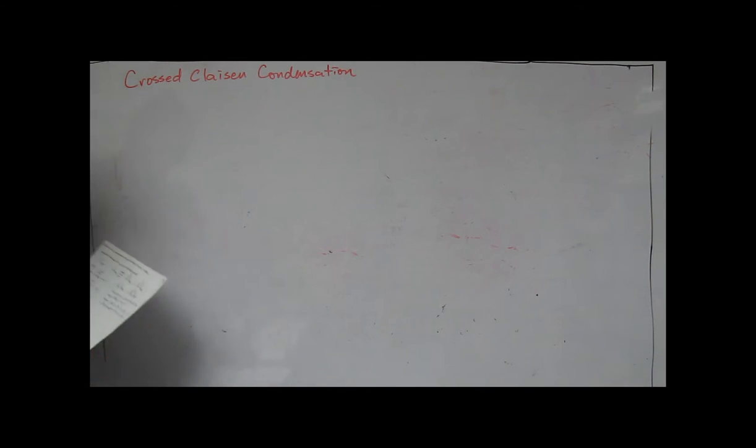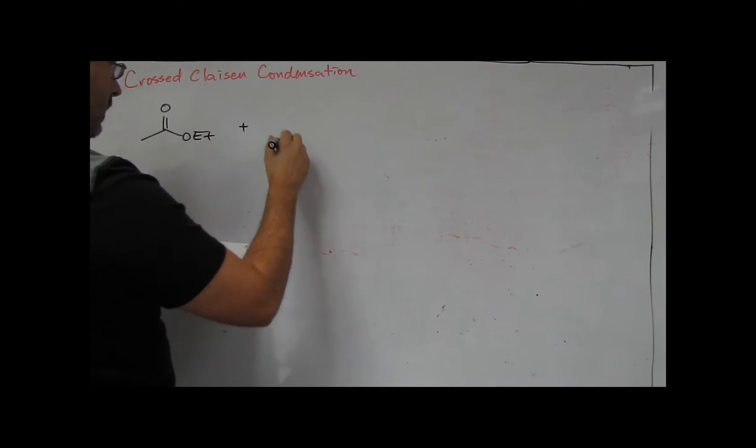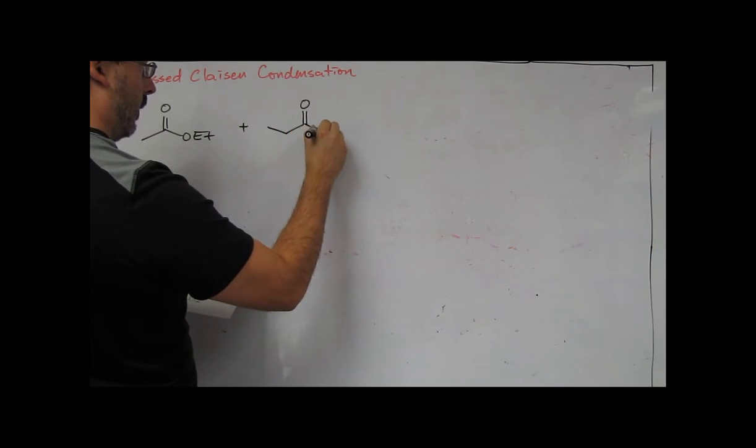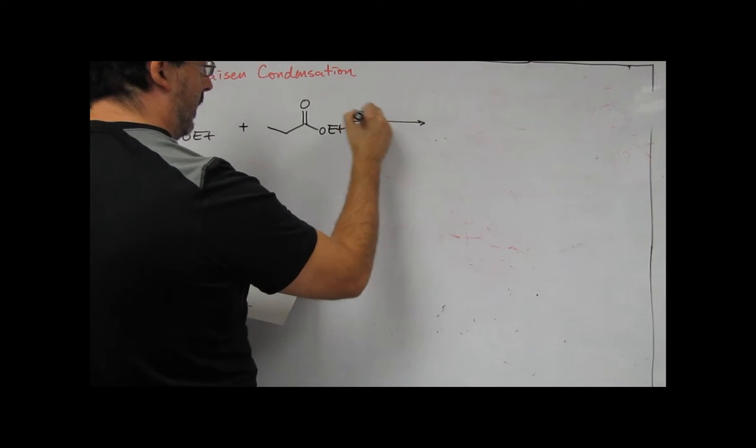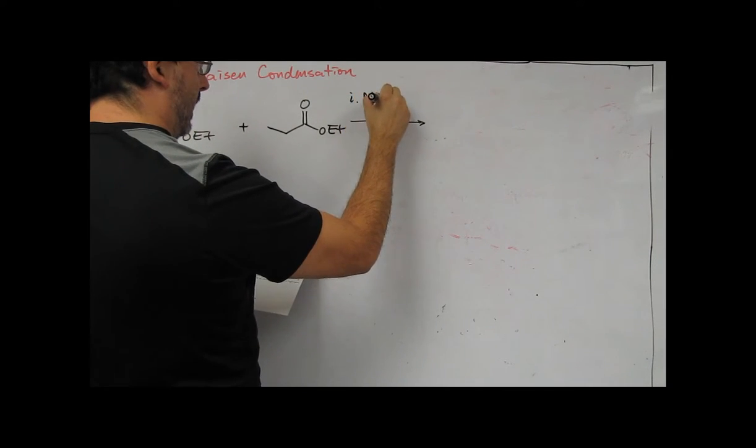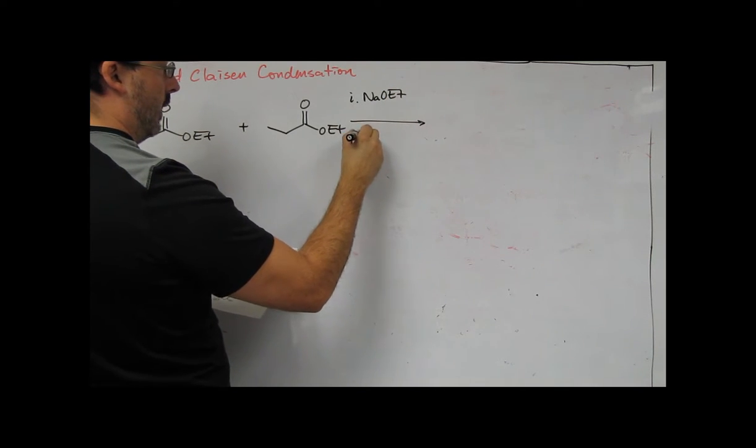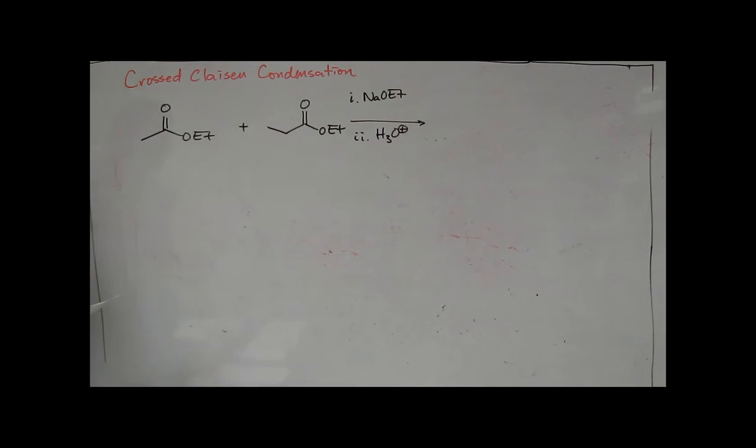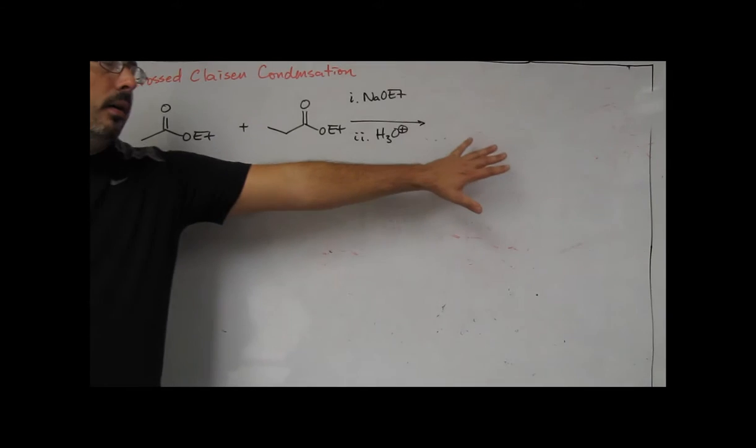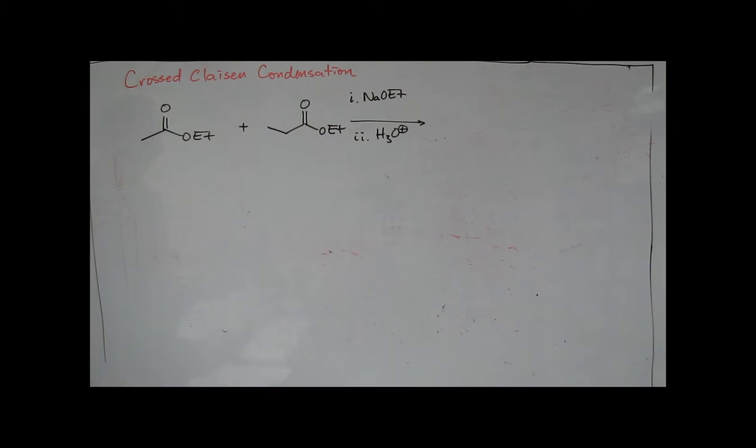So say for example we're starting with ethyl acetate, this is one of our esters. We have another ester, ethyl propanoate. We're then treating that under basic conditions with sodium ethoxide, and then we're going to do our aqueous acidic workup. So we want to figure out what the potential products are, and we want to be methodical about determining how those products can form.